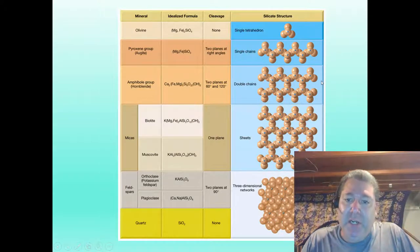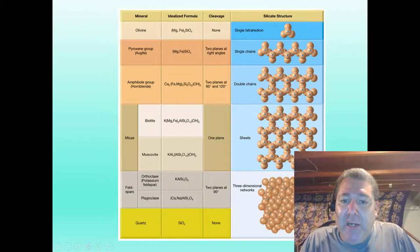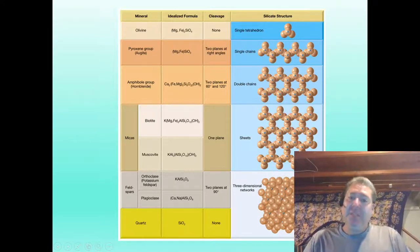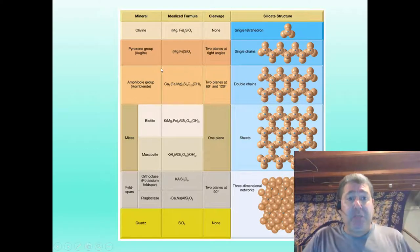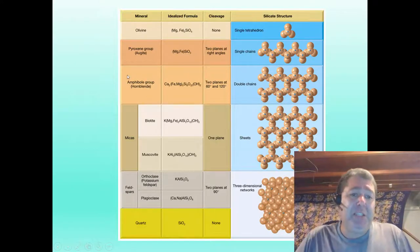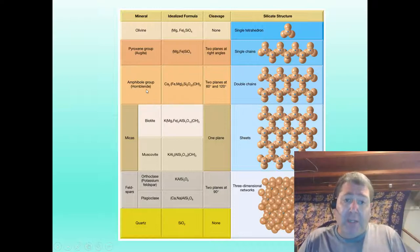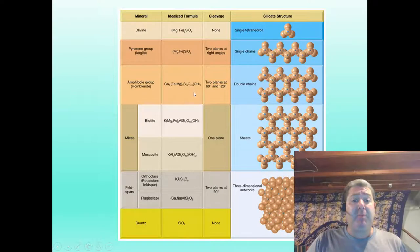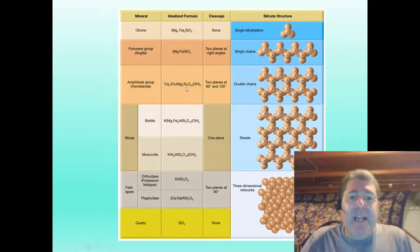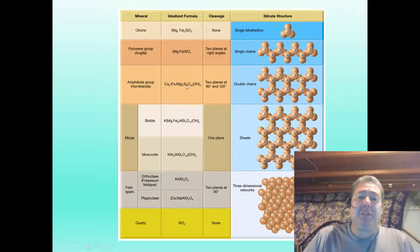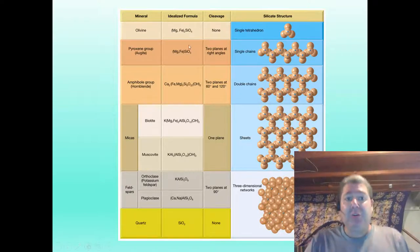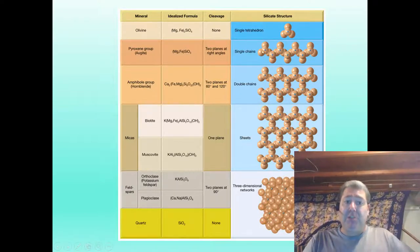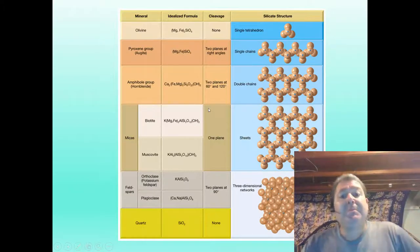Cooling things down even more, we can take single chains and attach one to another, sharing oxygens between adjacent chains. This creates double chains — our amphibole group. The most common amphibole mineral is hornblende. Our ratio drops further to something like 22 oxygens to 8 silica — the ratio of oxygen per silica keeps dropping, or inversely, the ratio of silica to oxygen keeps rising.